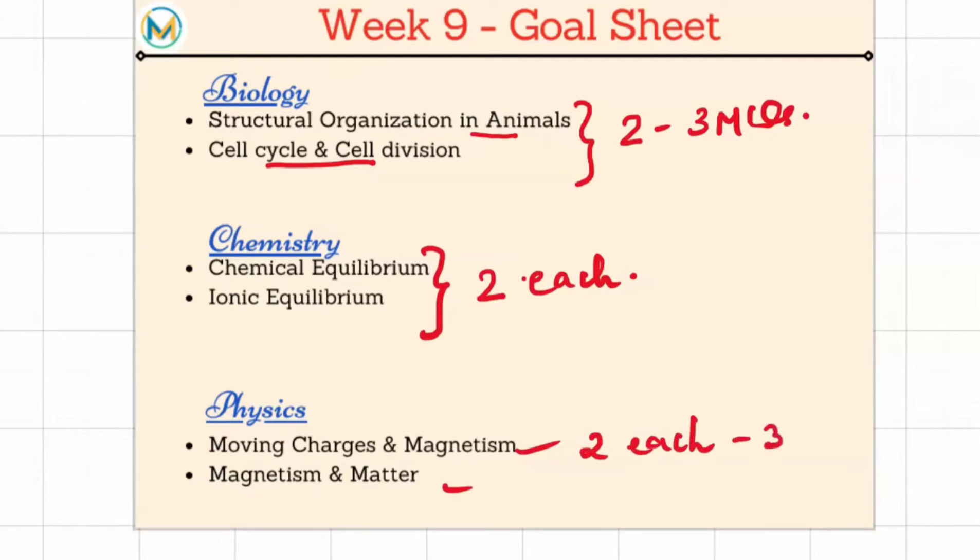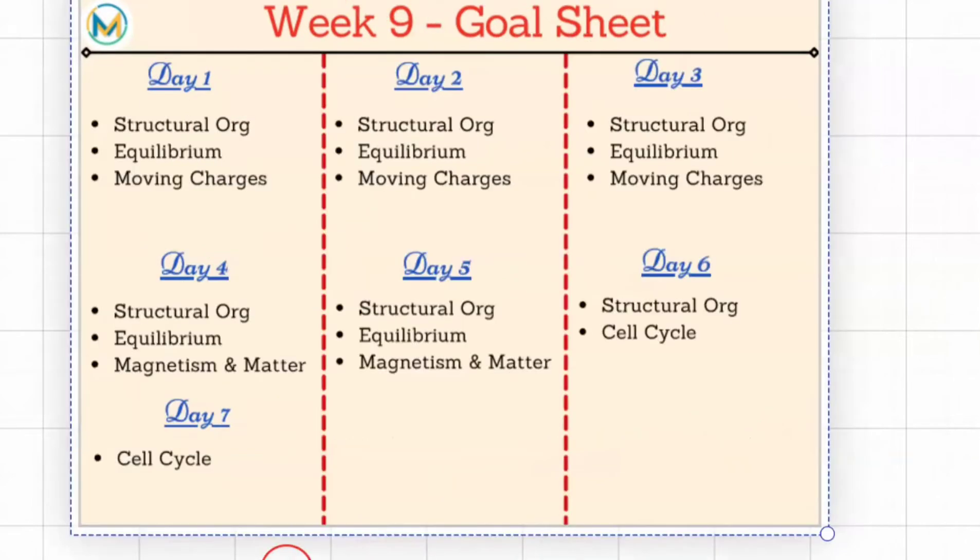So this is going to be an easy week. We'll have time in the end to do some backlog chapters. So six chapters - let's see what our daily schedule looks like. Here's our Week 9 daily plan.